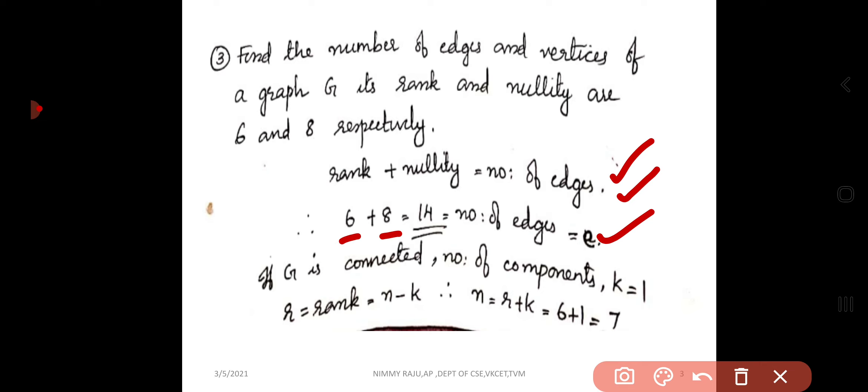Then, if G is a connected graph, the number of components K, we know that K means number of components, that is minimum value of 1. So according to this, rank R equal to n minus K.